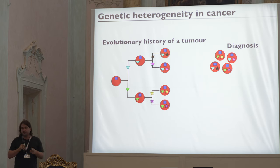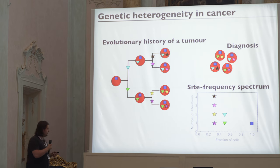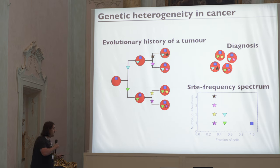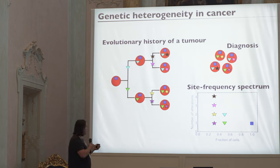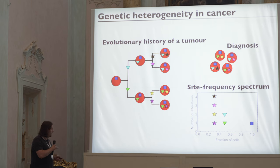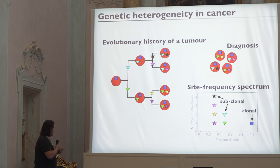We take the tumor out and sequence it to see what mutations are there and at what frequency — constructing a site frequency spectrum. The spectrum has clonal mutations (the blue mutations in all cells) and subclonal mutations (in a fraction of cells). Depending on population size and when they occurred, they shift to lower and lower frequencies. Continuing this process gives more and more mutations at lower and lower frequency.